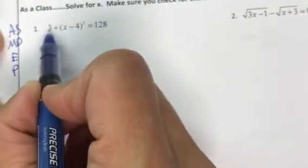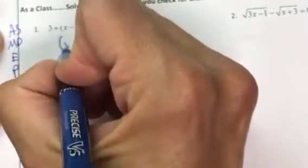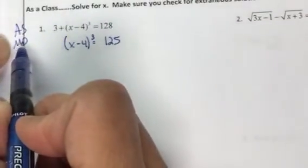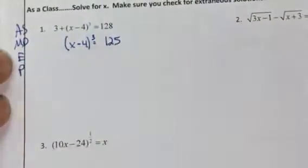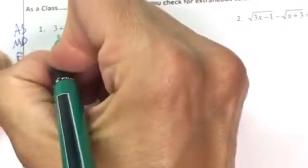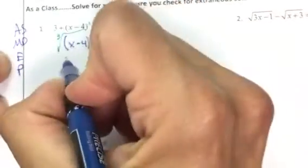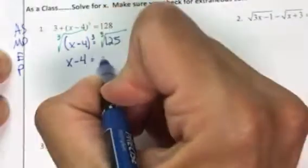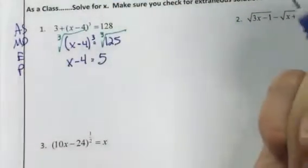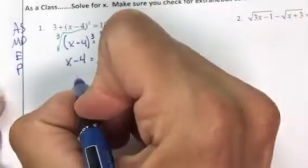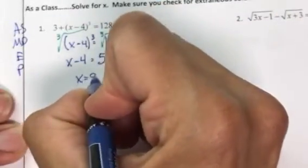Our goal is to get x alone. First I subtract 3, which gives me 125. There's no multiplication or division to move, so I get rid of the exponent by taking the cube root of both sides. That leaves me with x minus 4 on the left and 5 on the right — not positive or negative 5, because odd roots only give one answer. Then I add 4 and my answer is 9.